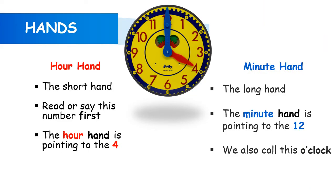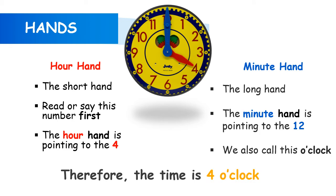When we tell time on an analog clock, we look at the hands. We read the hour hand first, which is the short hand, and the hour hand is pointing to the 4. Next we look at the minute hand, which is the long hand, and on this clock the minute hand is pointing to 12. Whenever the minute hand points to 12, we call this o'clock. Therefore, the time on this clock is showing 4 o'clock.